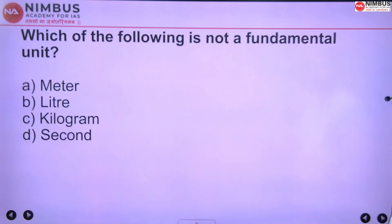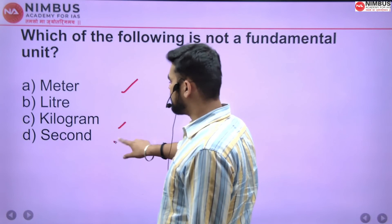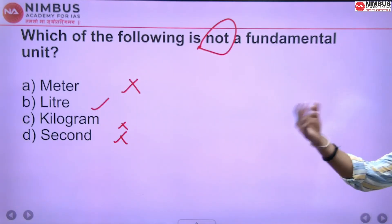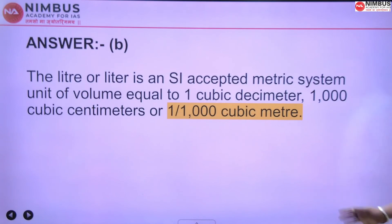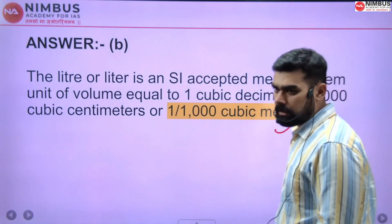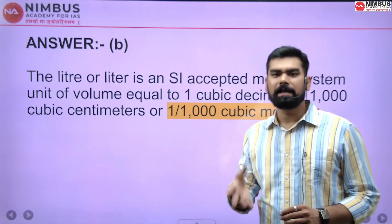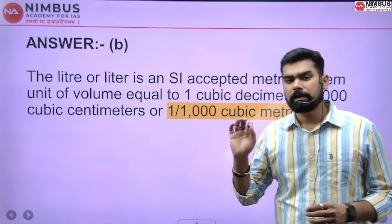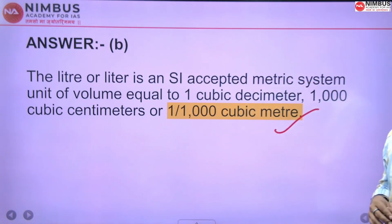Which of the following is NOT a fundamental unit? Meter, kilogram, and second are all fundamental units, so they are not the answer. The answer is B — one by one-thousandth of a cubic meter, i.e., liter. Liter is not a fundamental unit. Do watch these videos because there is a high probability that questions from previous years appear in the HPAS exam. Topics like centrifugation have been asked not once, not twice, but three times. Syllabi are limited and questions repeat. Thank you very much, keep following.